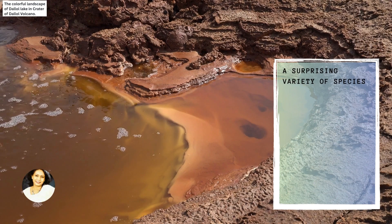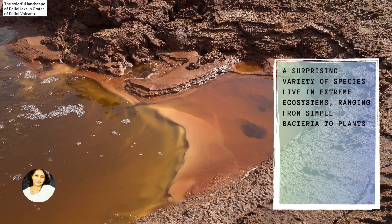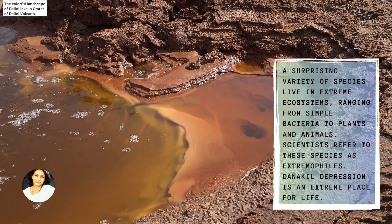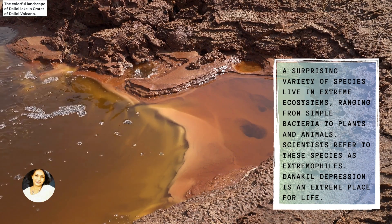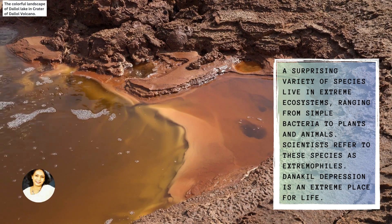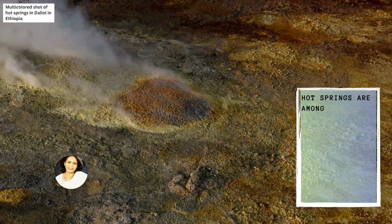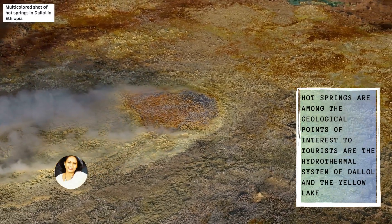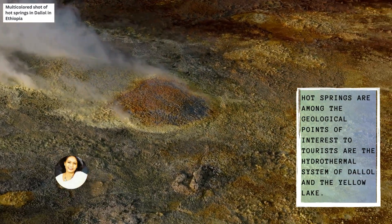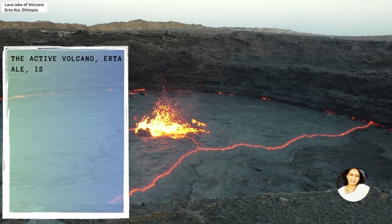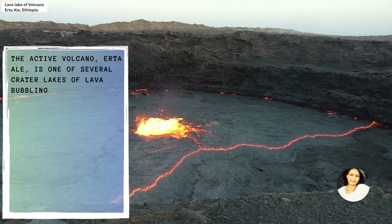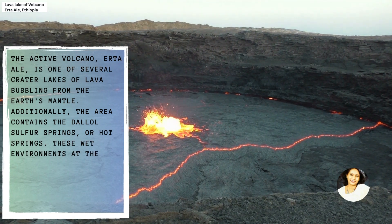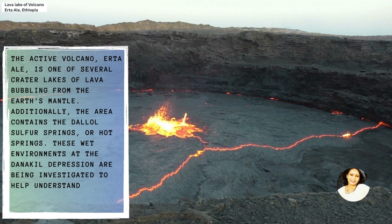A surprising variety of species live in these extreme ecosystems, ranging from simple bacteria to plants and animals. Scientists refer to these species as extremophiles. The hot springs are among the geological points of interest to tourists, including the hydrothermal system of Dallol and the Yellow Lake. The active volcano Erta Ale is one of several crater lakes of lava bubbling from the Earth's mantle. The area also contains the Dallol sulfur springs, or hot springs.